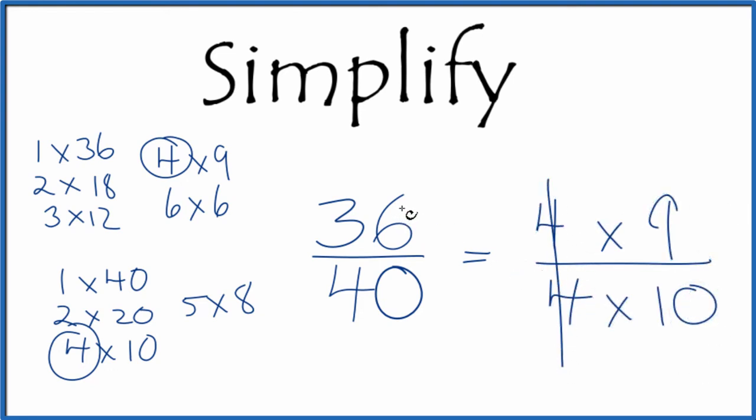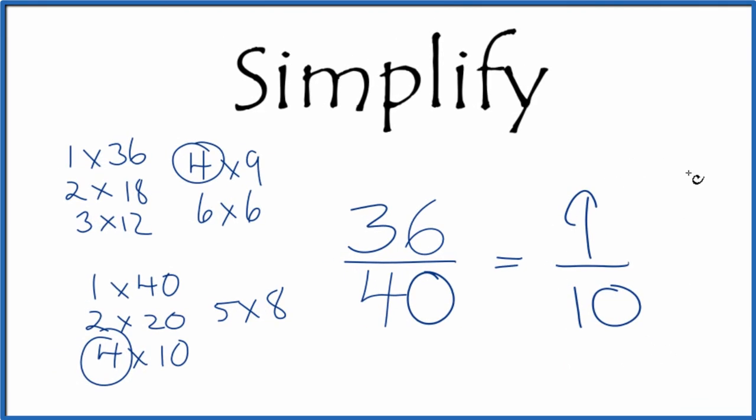We've reduced 36 over 40 down to 9 tenths, and we can't reduce this any further. So we've successfully simplified 36 over 40 down to 9 tenths.